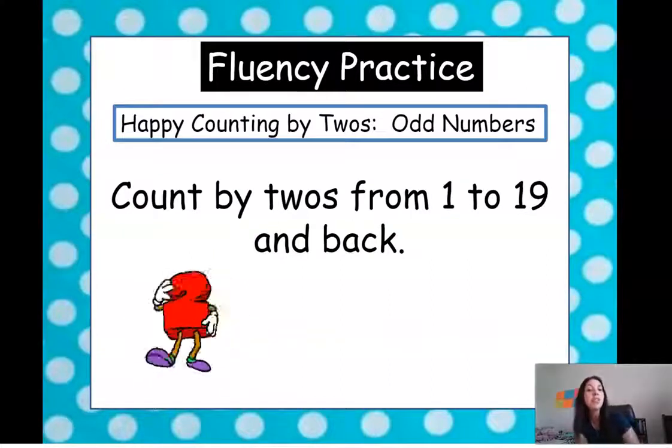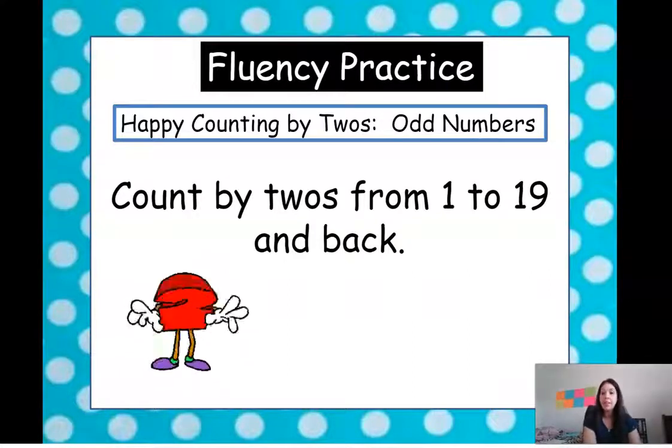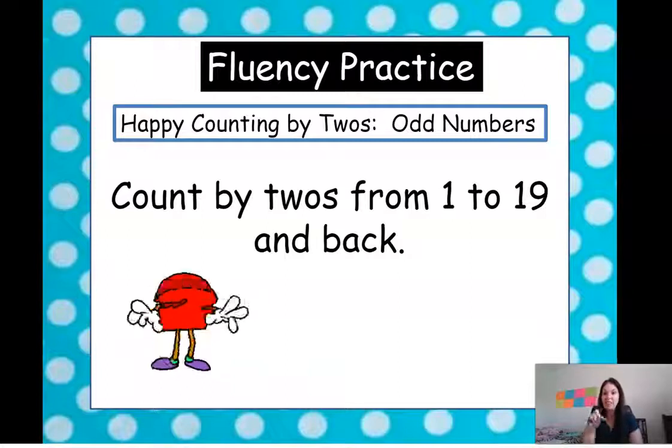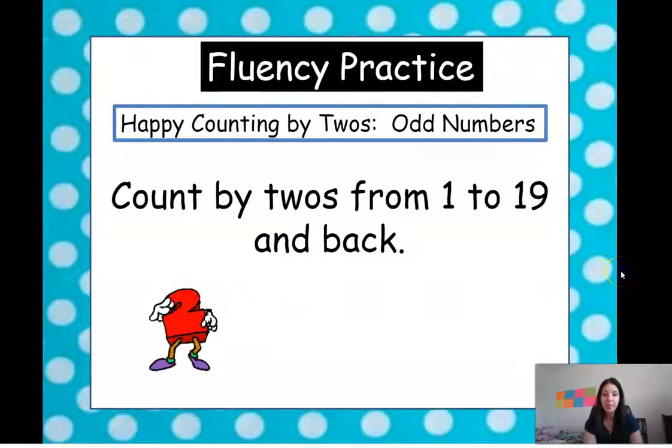This time, we're going to count by twos, but we're not starting at two. We're going to count by twos starting from one. So we're going to start at one, and then two more from one is going to give us three. We're going to count up by twos using our odd numbers. This is a little bit different. Here we go.